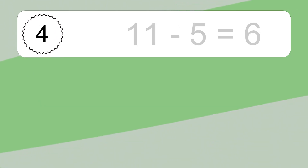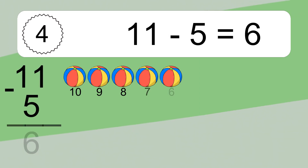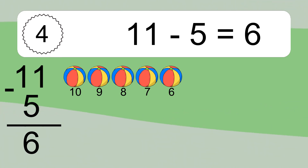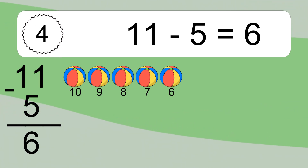11 minus 5 equals what? 11 minus 5 equals 6. Let's count it: 10, 9, 8, 7.